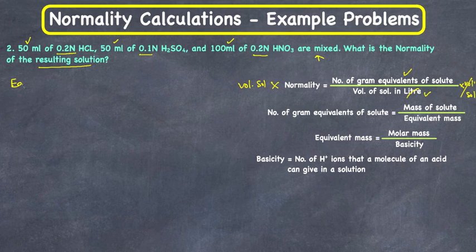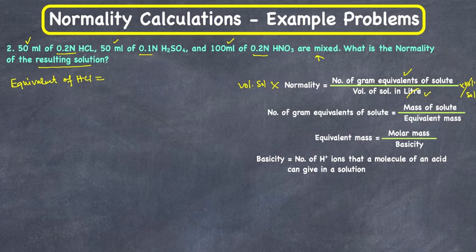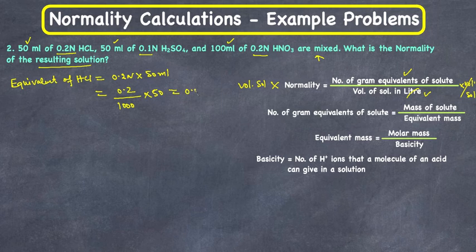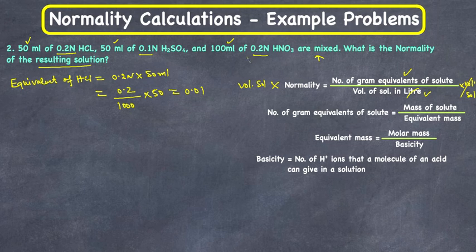Equivalents of HCl = normality × volume = 0.2 N × 50 ml. Since normality means equivalents per liter (1000 ml), this is 0.2/1000 × 50 = 0.01 equivalents.